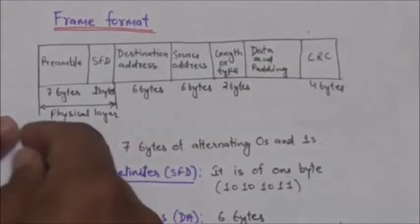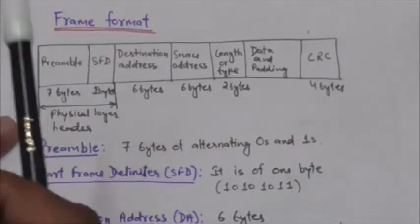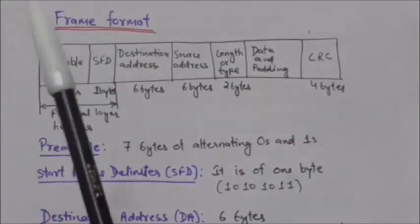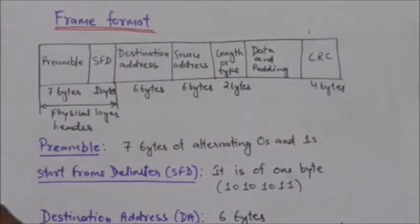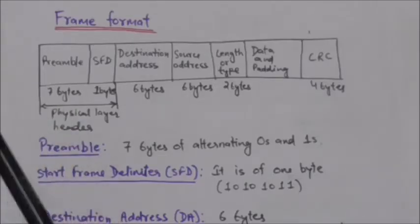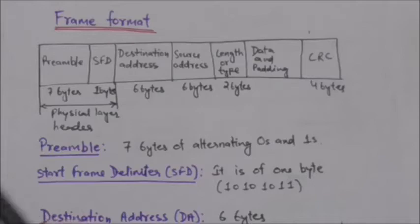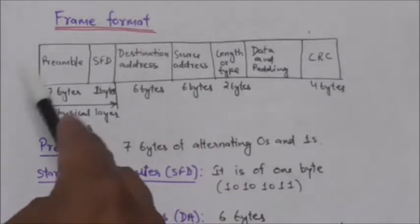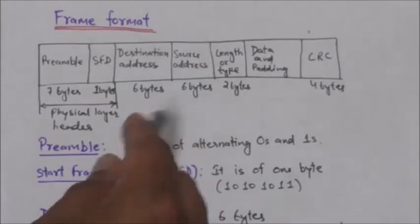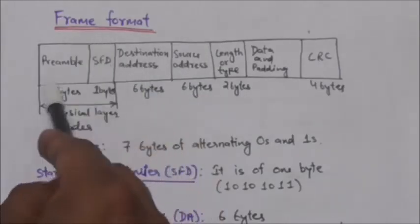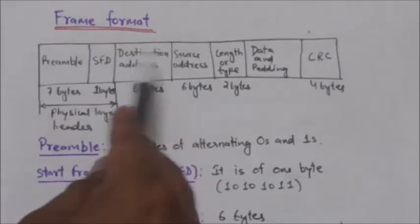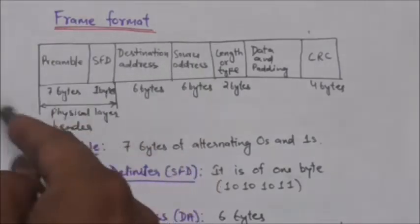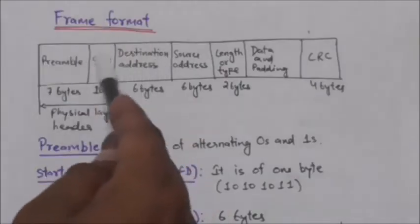Now we will see the frame format in Ethernet. The Ethernet frame contains seven fields. Ethernet does not provide any mechanism for acknowledging received frames, so acknowledgements must be implemented at higher layers.